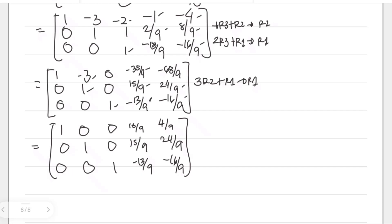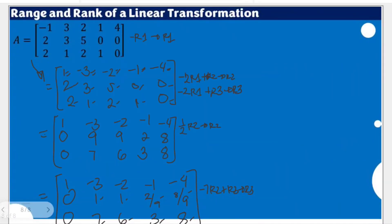The goal is to identify the columns with leading ones, which we call pivot columns. The first three columns are the pivot columns. The remaining columns have no leading ones and will not be included. Since the first three columns are pivot columns, going back to the initial matrix, the first three columns of the initial matrix comprise the column space, which equals the basis of the range. The basis for the range of T is the set containing the first column: negative 1, 2, and 2.